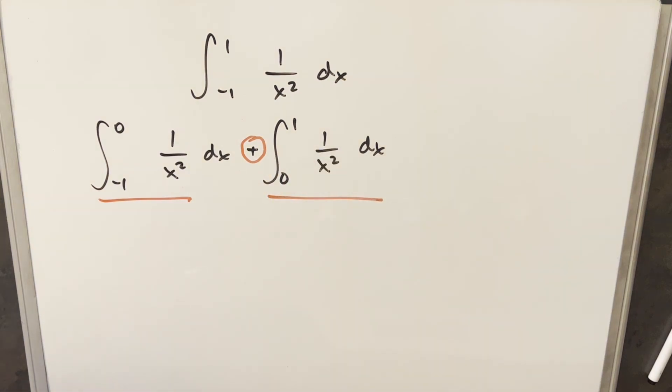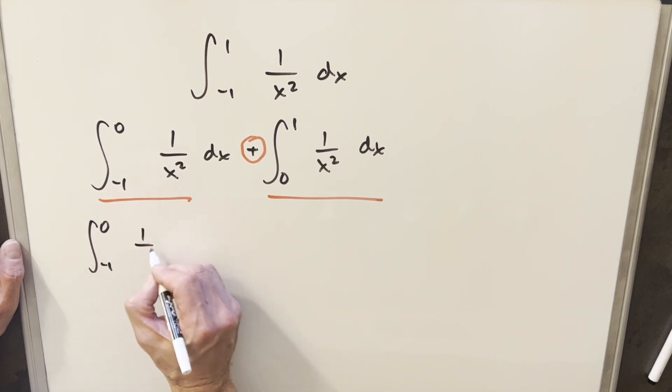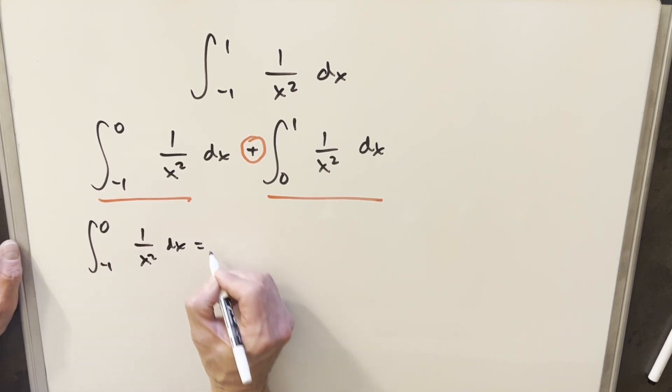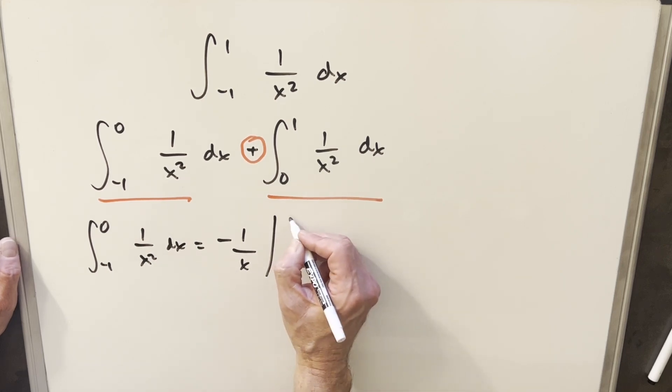So we can check these integrals. I can just start with either one. So let's start here. And if we integrate this one, well, it's still going to be the same integral minus 1 over x. And we just need to evaluate this from minus 1 to 0.